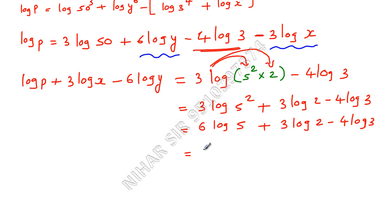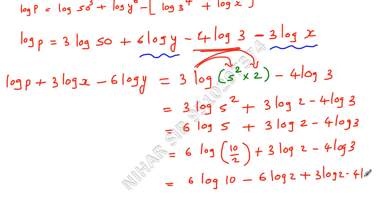Now this will be 6 log instead of 5 I can write 10 upon 2 plus 3 log 2 minus 4 log 3. Now this will be 6 log 10 minus 6 log 2 plus 3 log 2 minus 4 log 3. Now you can see these are like terms. Negative 6 positive 3. Negative 6 log 2 positive 3 log 2. So minus 6 plus 3 is minus 3.